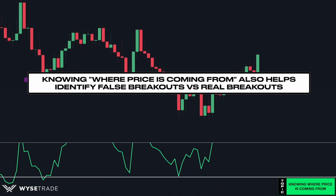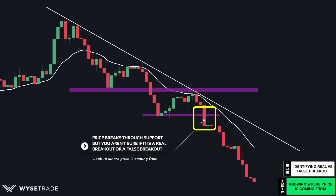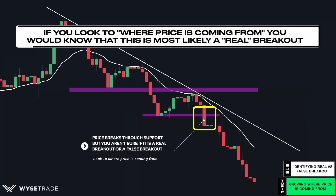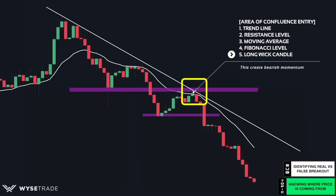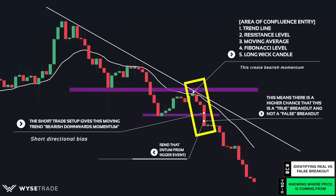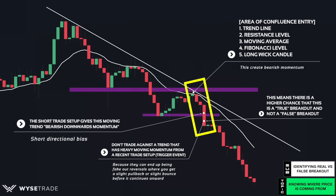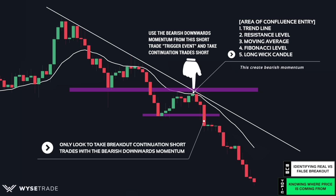This same concept applies to false breakouts as well. You notice a candle break through support but aren't sure if this is a real breakout or a potential false breakout. If you look to where price is coming from, you would notice something very telling. You had a recent high quality short trade setup at an area of confluence where the trendline, resistance level, and moving average all crossed. This gives the moving trend a short directional bias and heavy bearish momentum. This type of breakout has a higher chance of being a true breakout and not a false breakout. In cases like this, avoid taking any reversal trade because you may get a slight pullback but price will continue onwards. The best thing to do is take a breakout continuation trade using the methods shown in this video, since you have bearish momentum from the recent short trade setup - also known as the trigger event.